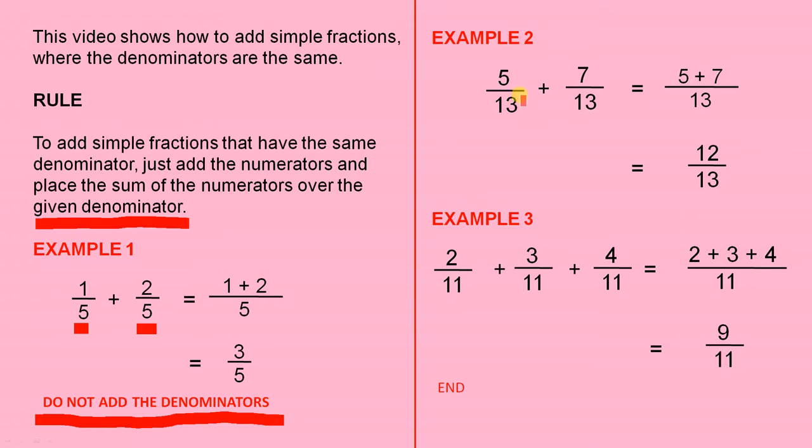5 over 13 plus 7 over 13. The given denominator that we talked about is 13. See how they're both the same? The rule says we add the numerators together. So 5 plus 7.